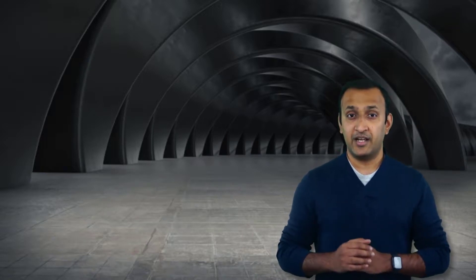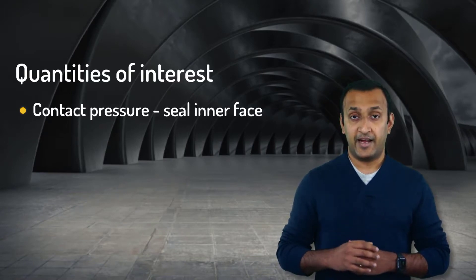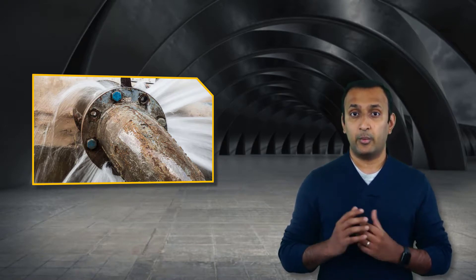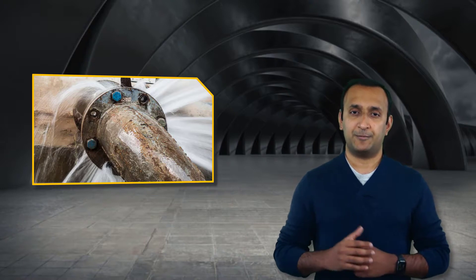Now, let's look at the case study in which we solve a model of a bolted flange that has a seal sandwiched due to bolt pre-load. The bolts are modeled using two methods: one using solid elements, and the other using beam elements. In this case study, we are comparing different quantities of interest, such as contact pressure at the inner surface of the seal and on the full surface of the seal, and the stresses in the flange and the seal. The main function of the seal is to prevent the leakage of gas or liquid, and leakage occurs when the contact pressure on the seal falls below its minimum seal pressure. Note that when we use the beam connection, the representation of the bolt is just a cylinder with no bolt head or nut, so the stiffness of the bolted joint is slightly different between these two cases.